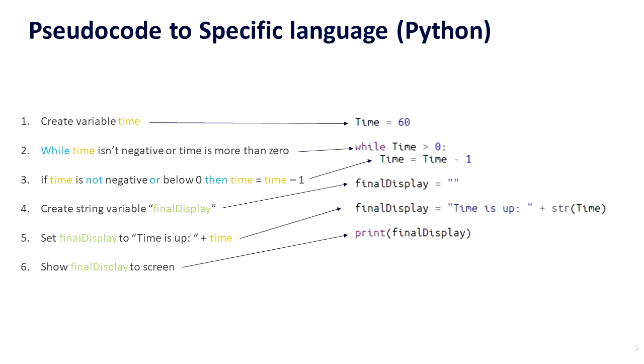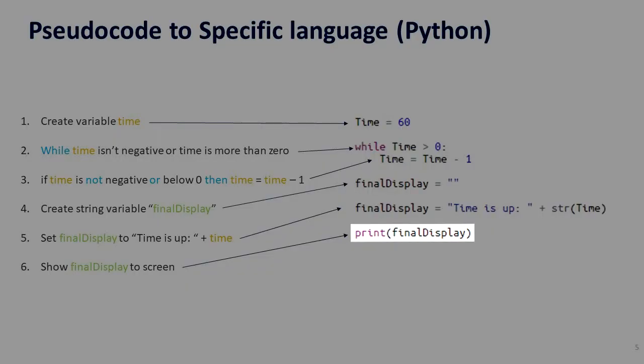So we use that function str to translate it back into a string. Then we display it back to the console.